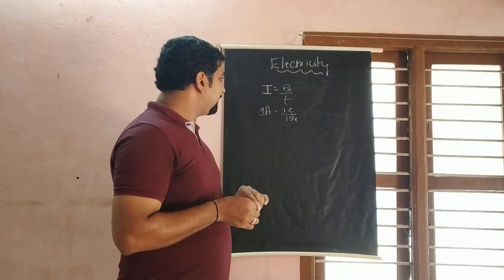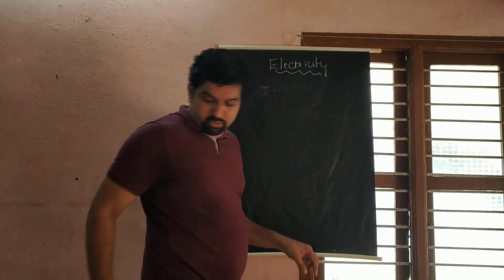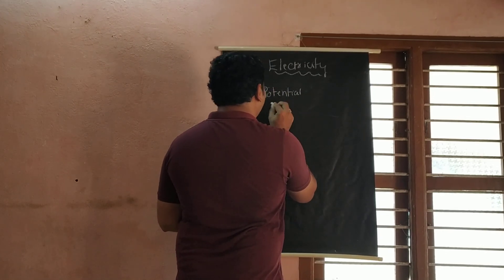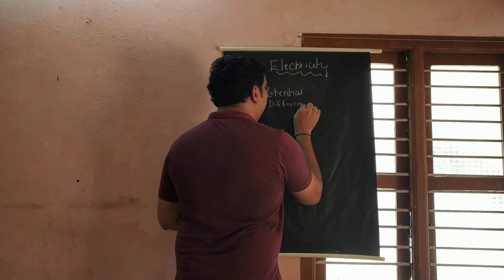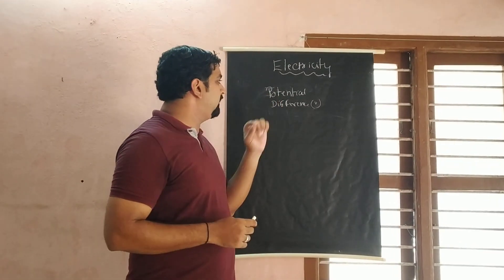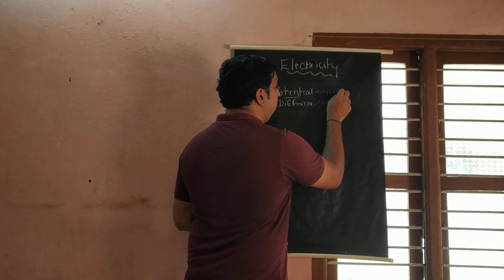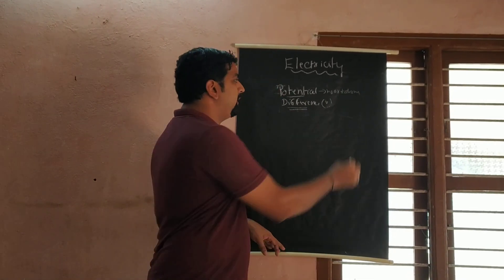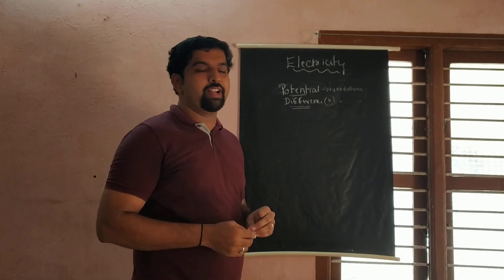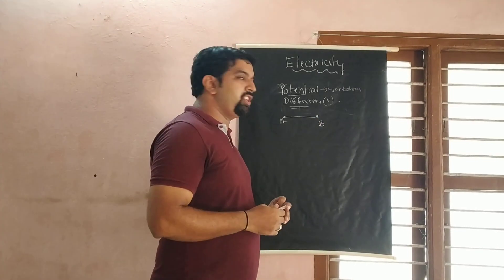The next topic is potential difference. Potential difference is the work done to take the charge from one point to another. The symbol for potential difference is V. Potential refers to the work done, and difference refers to the measurement between two points. So potential difference is the work done to take the charge from one point to another.